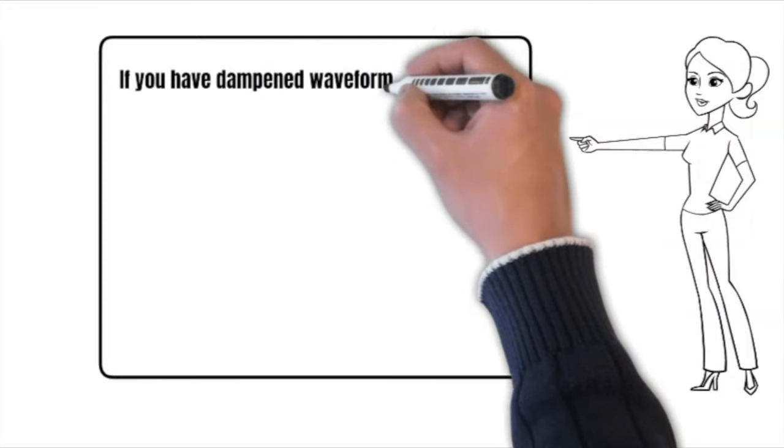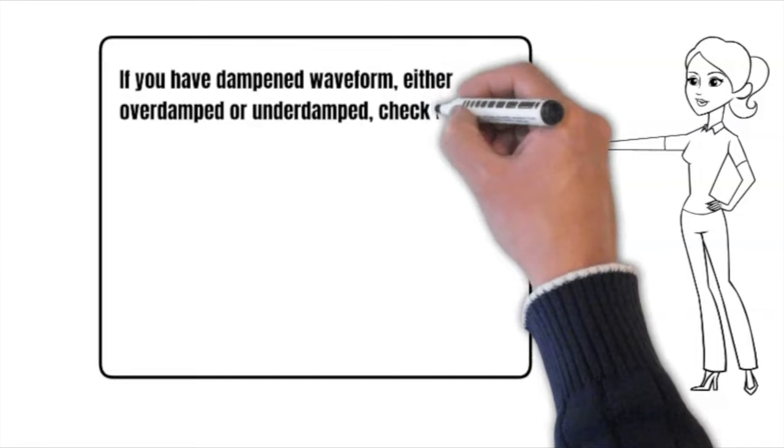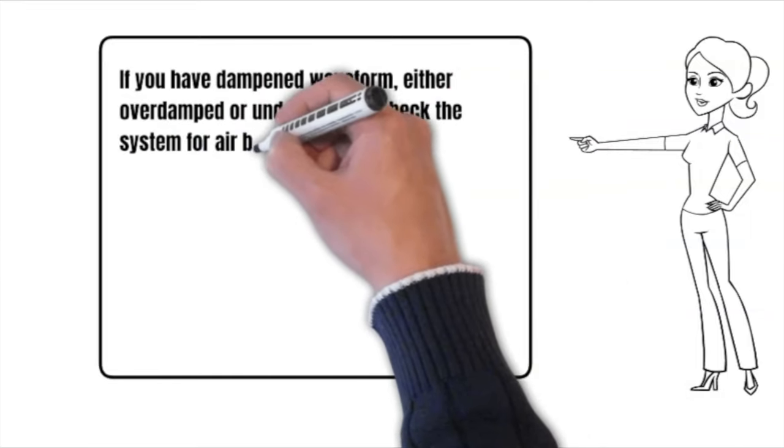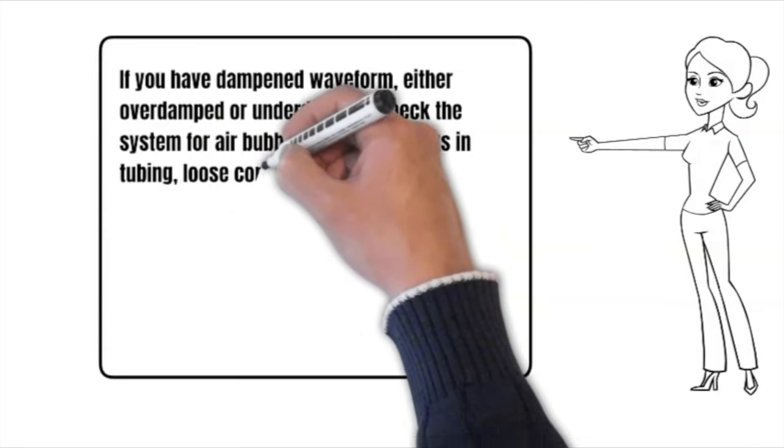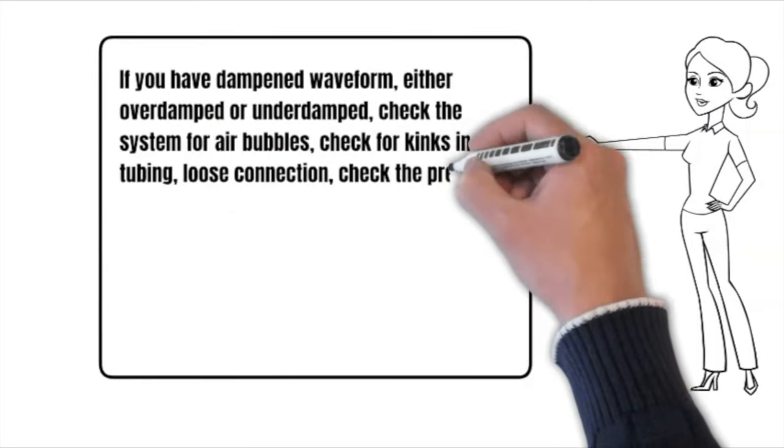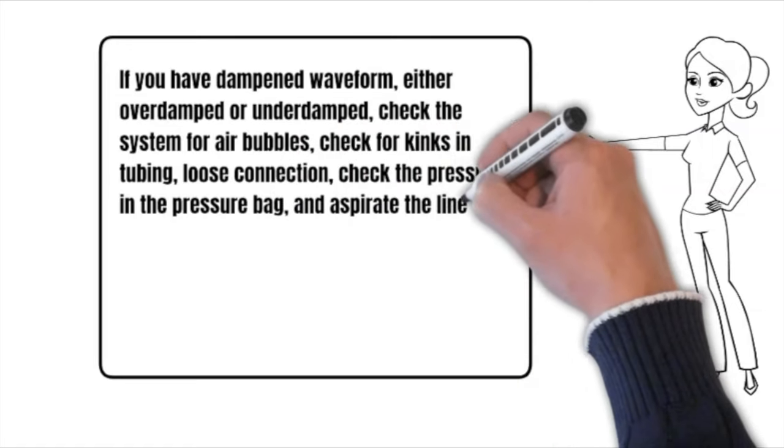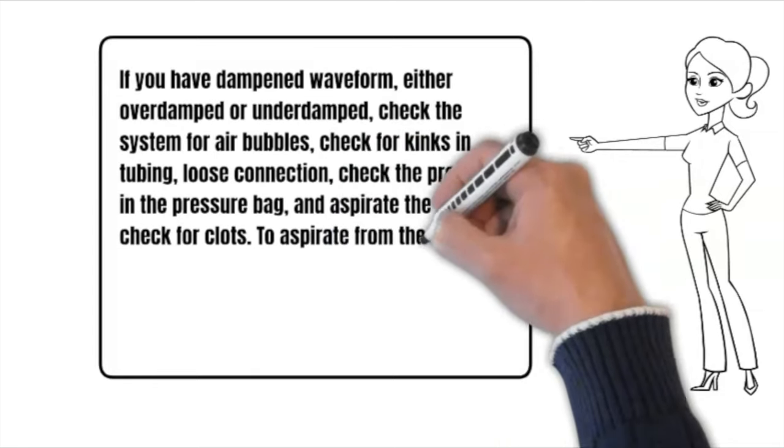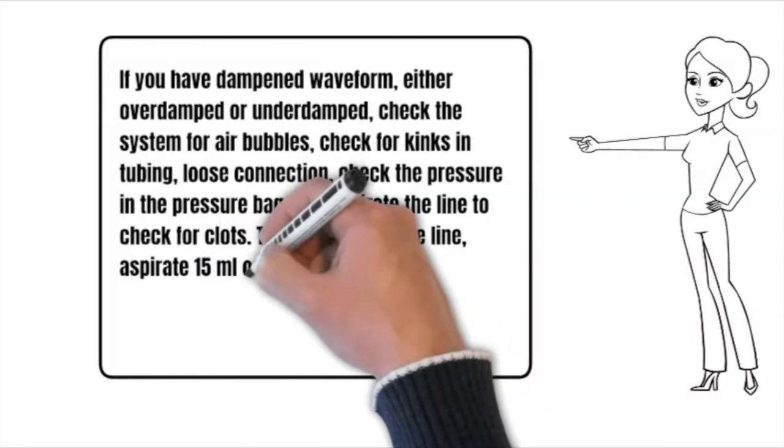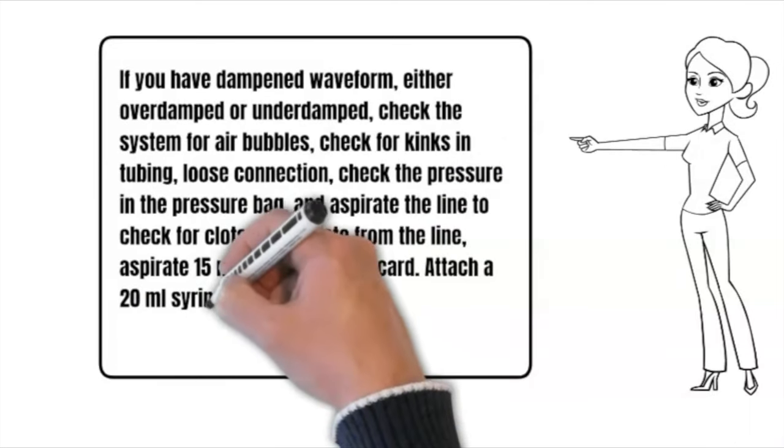If you have a damped waveform, either overdamped or underdamped, check the system for air bubbles, check for kinks and tubing, check for loose connections, check the pressure in the pressure bag, and aspirate the line to check for clots. To aspirate from the line: aspirate 15 ml of blood and discard, attach a 20 ml syringe filled with saline and flush the line manually.